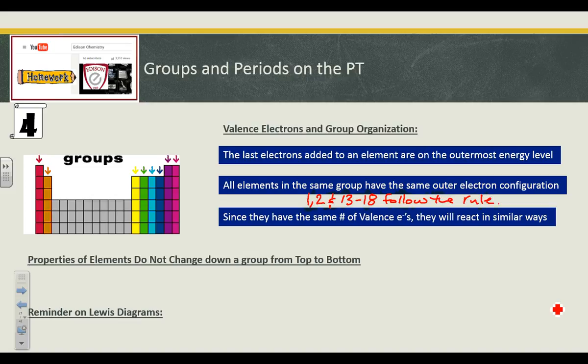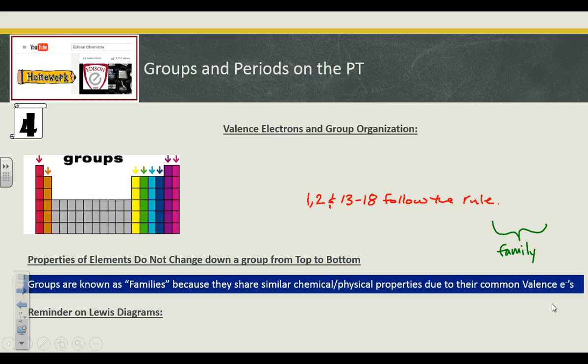Since they have the same number of valence electrons, they will react in similar ways, which means that they belong in the same family. Mosley, when he arranged his periodic table the way he did, knew this. The similar ways they react means they should belong in the same stack, and that's how we get the periodic table that we see today. Properties of elements do not change down a group from top to bottom. They're known as families because they share those similar physical and chemical properties due to their common valence electrons. While their properties do change a little bit, it's not enough to say they belong in a different group. They're very, very similar and mostly very consistent.